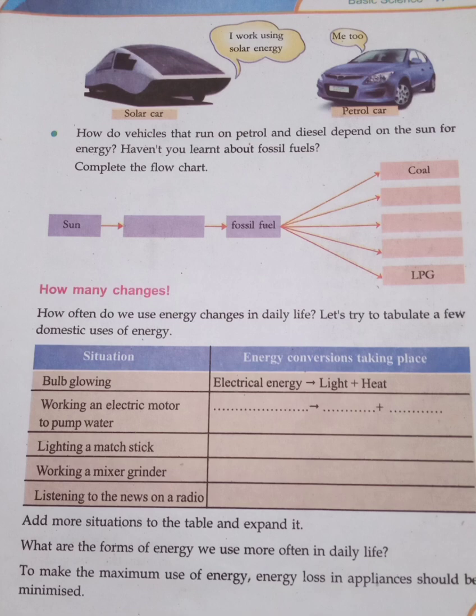Bulb glowing: electrical energy is converted to light plus heat energy. Working of an electric motor to pump: electrical energy converted to mechanical energy plus heat energy. Lighting a sparkler: chemical energy converted to light plus heat energy.